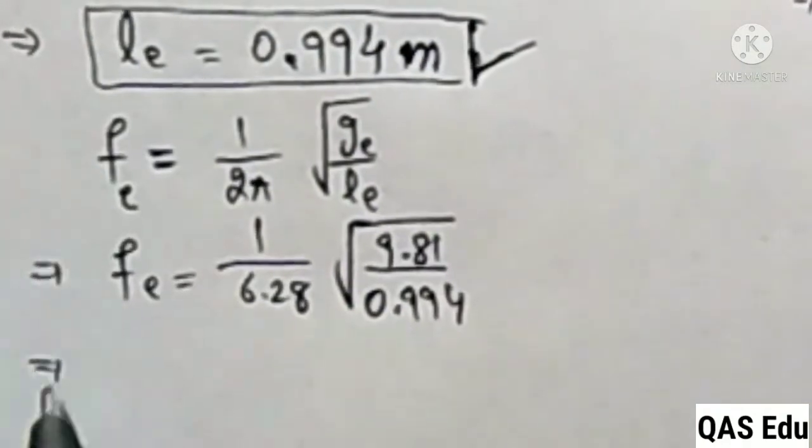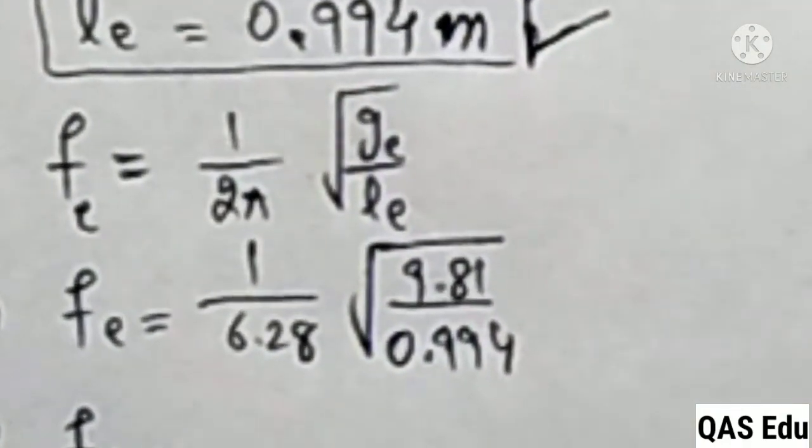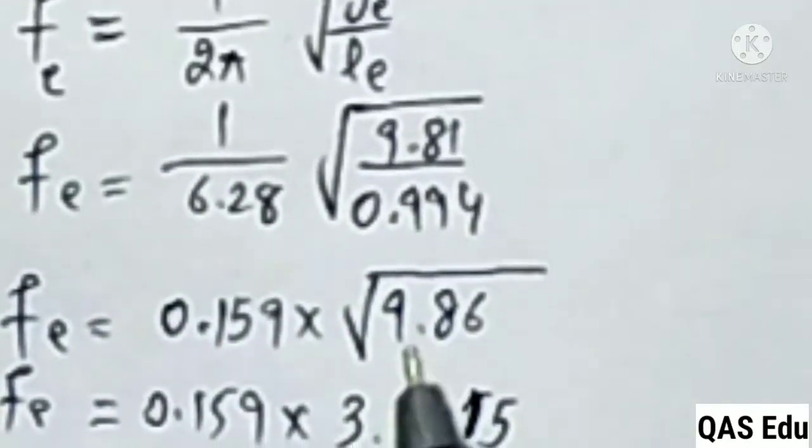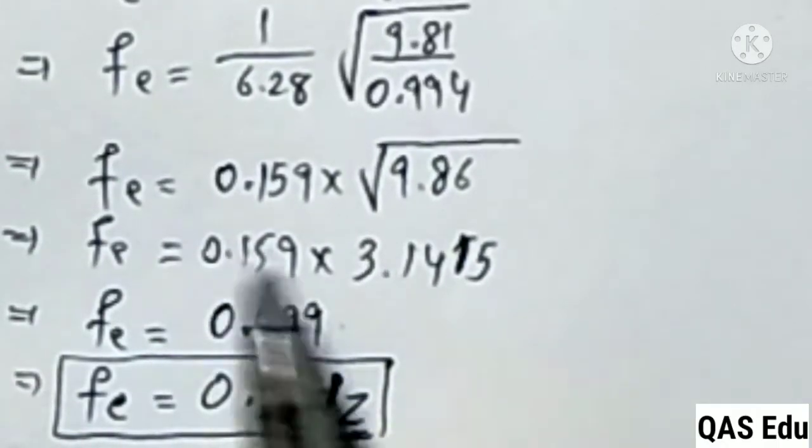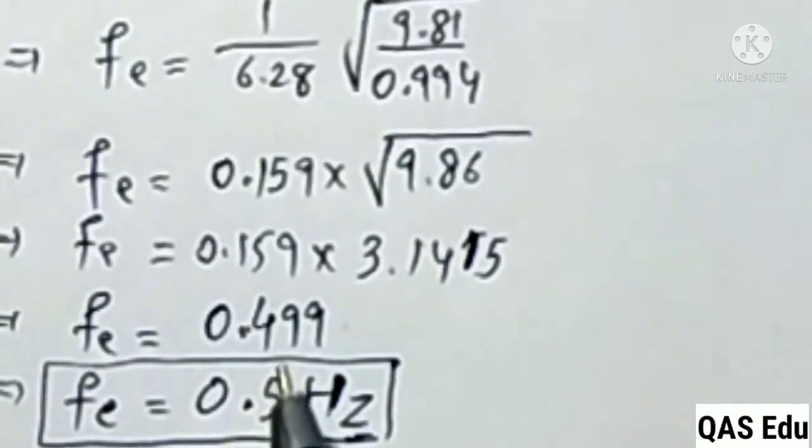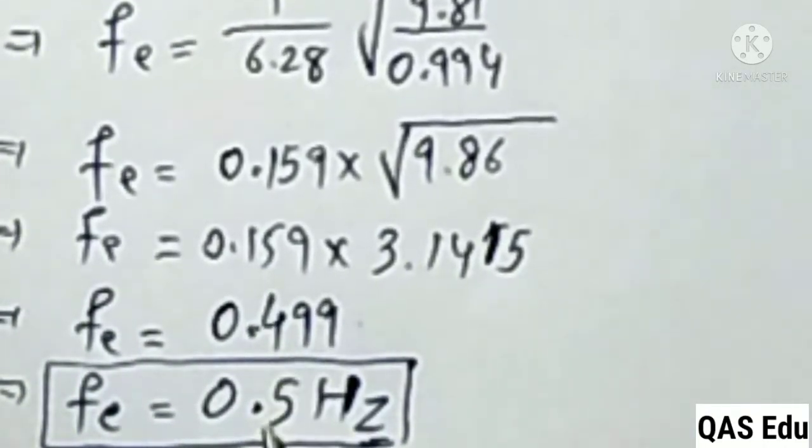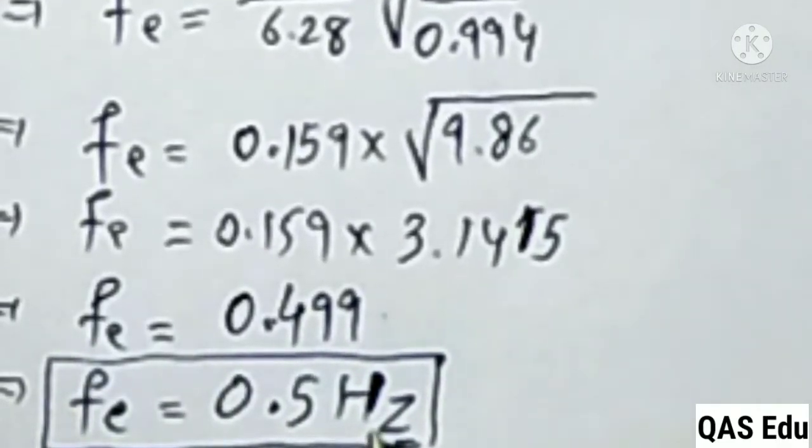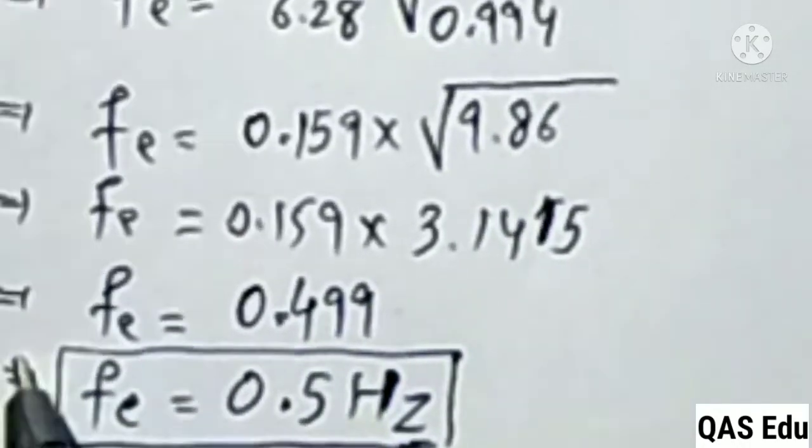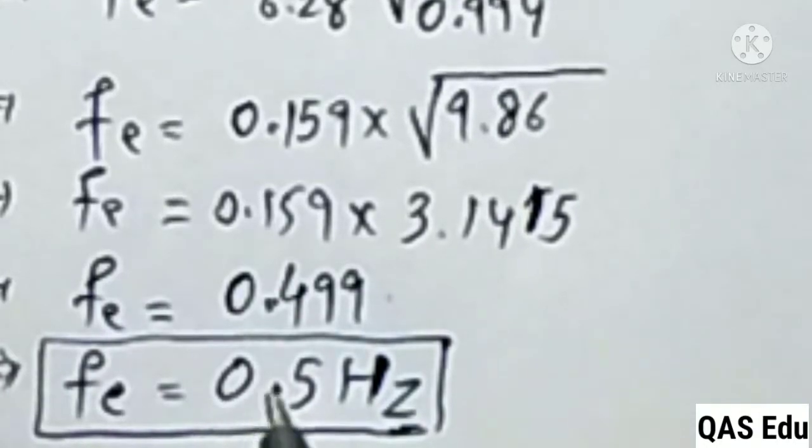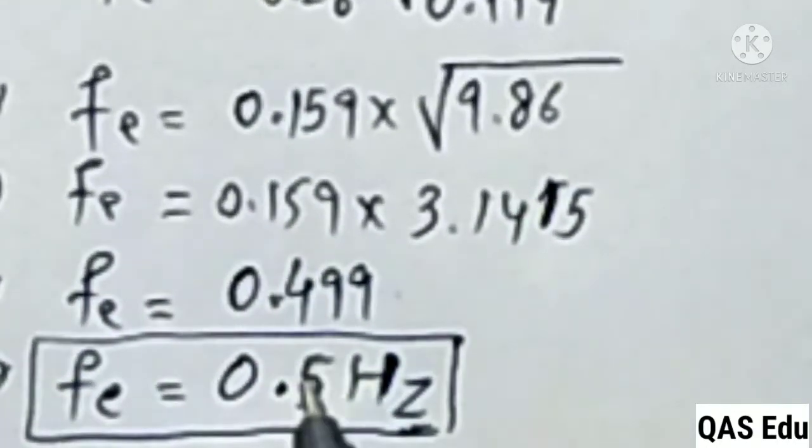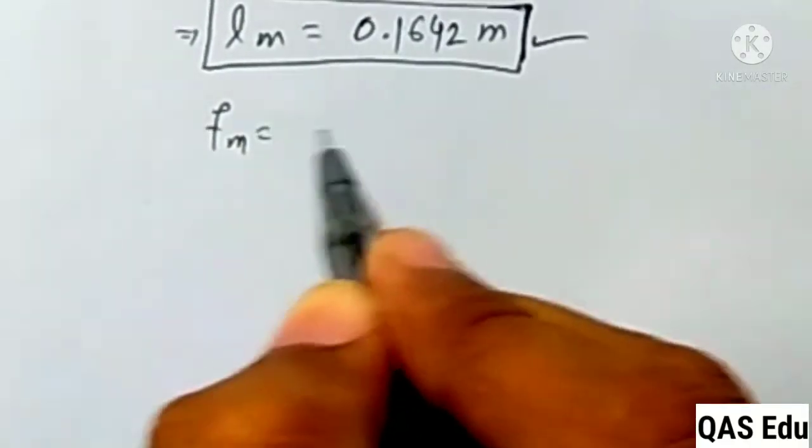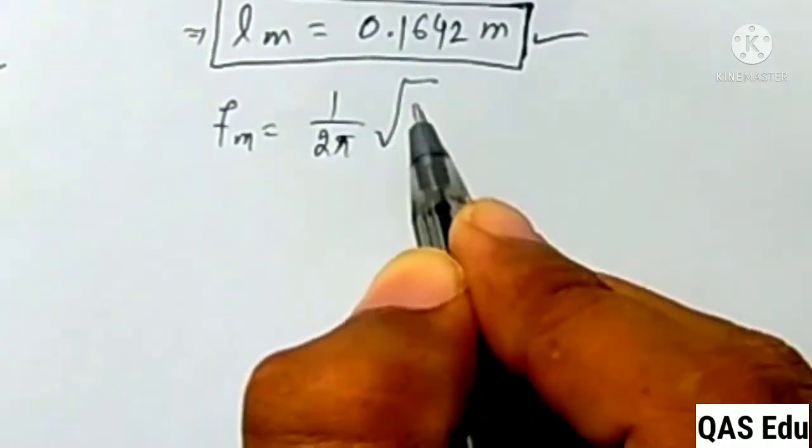Calculating the frequency on Earth: 1/6.28 × √9.866 = 0.159 × 3.141 = 0.499 Hz, which rounds to 0.5 Hz. The frequency of the pendulum on Earth is 0.5 Hz.